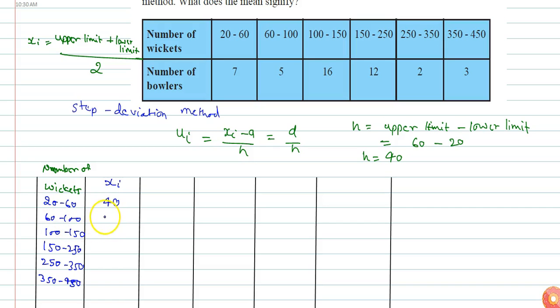This becomes 80. Then 100 plus 150 equals 250 divided by 2, which equals 125.